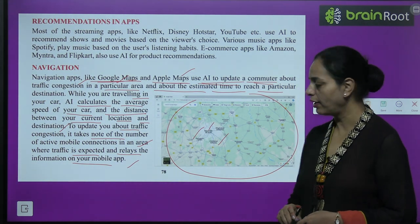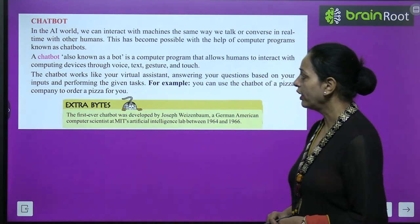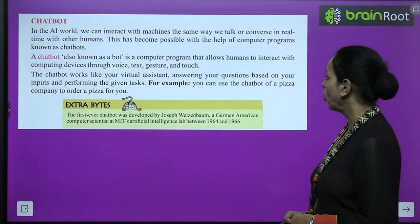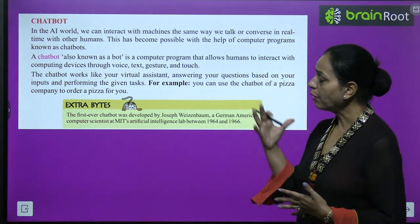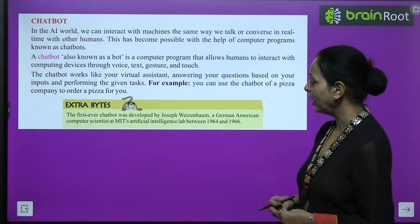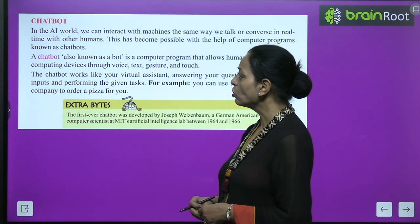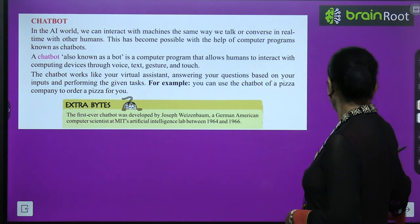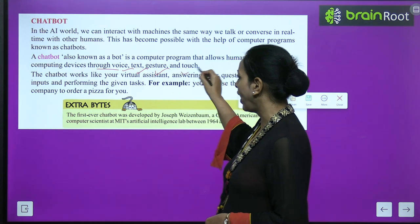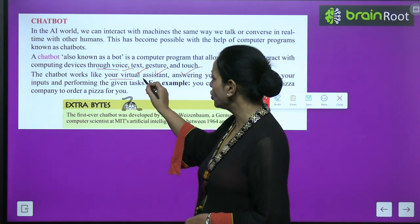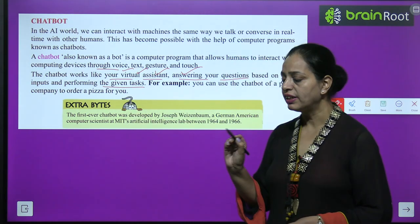In the AI world, we can interact with machines the same way we talk with other humans in real time. Just as we chat with each other, we can interact with machines through chatbots. This has become possible with the help of computer programs known as chatbots. A chatbot, also known as a bot, is a computer program that allows humans to interact with computing devices through voice, text, gesture, and touch. The chatbot works like your virtual assistant, answering your questions based on your inputs and performing given tasks.